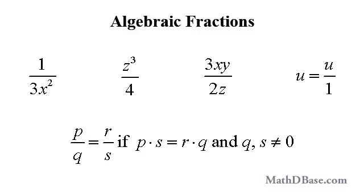Any two algebraic fractions p over q and r over s are equal to each other if p times s is equal to r times q, provided that neither q nor s is equal to 0.